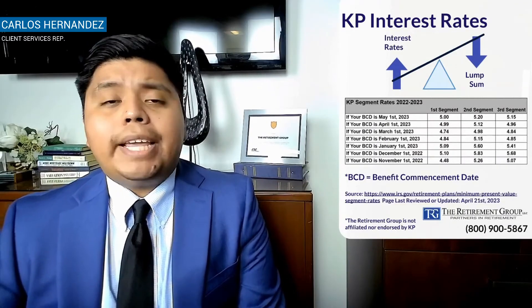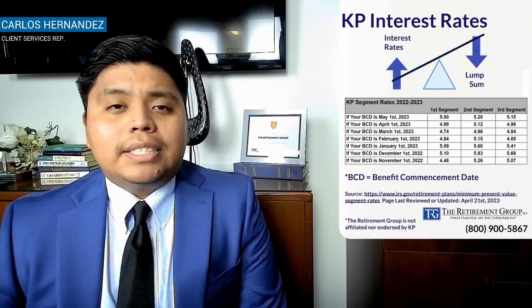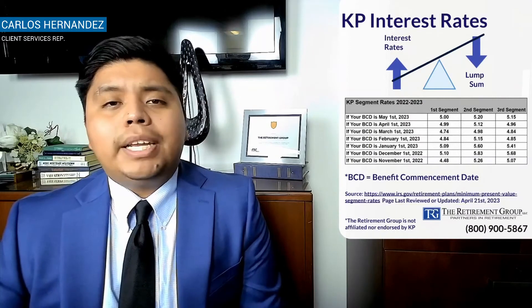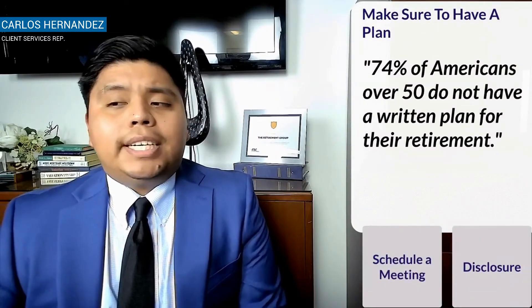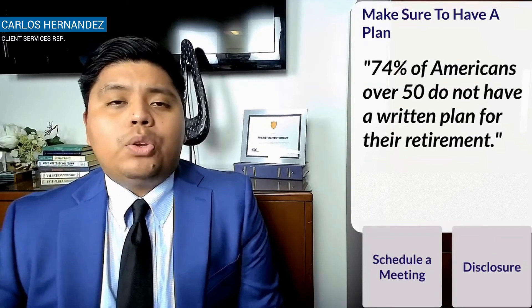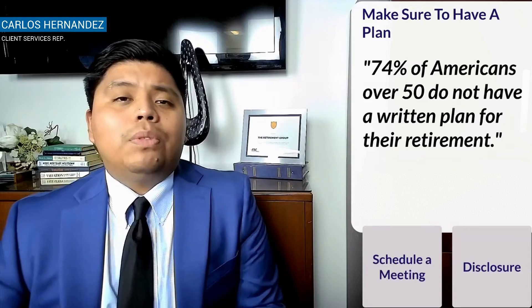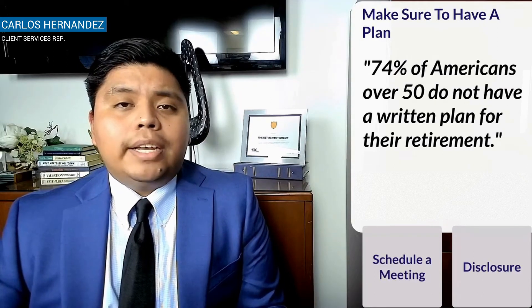If you're not aware of how these interest rate changes affect your pension lump sum, make sure you connect with a retirement specialist to ensure you're making the right choices for yourself and your family. We do provide a complementary analysis where we go over your retirement outlook, compare different retirement dates to optimize your pension payments, and if you're contemplating taking the lump sum versus the annuity, the analysis will clarify which option is best suited for your situation. Did you know that 74 percent of Americans over the age of 50 do not have a written retirement plan? Please connect with a retirement specialist to make sure you're optimizing your pension payout and all of your Kaiser benefits.